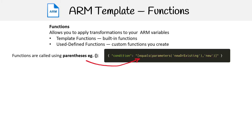The way functions work is you give the function name — for example, here it's called 'equals' — and then you have parentheses, and you pass in what you want to transform. So if you see parentheses, that's how you know it is a function.